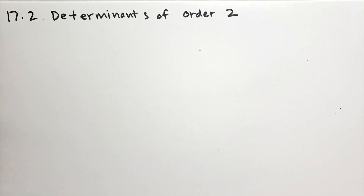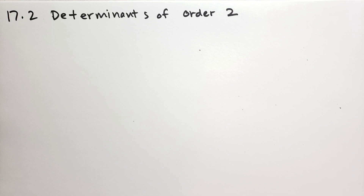Hello, welcome back. This is Jonathan Gardner. We're covering Sergey Lang's basic mathematics, and this is section 17.2, Determinants of Order 2.